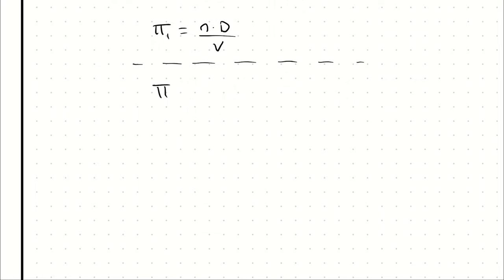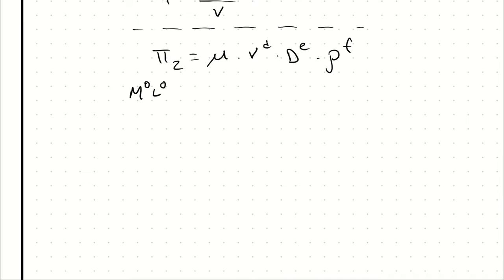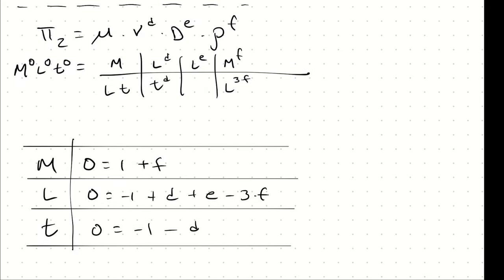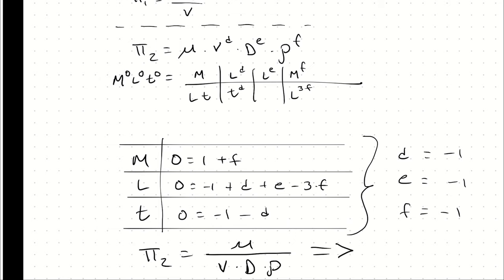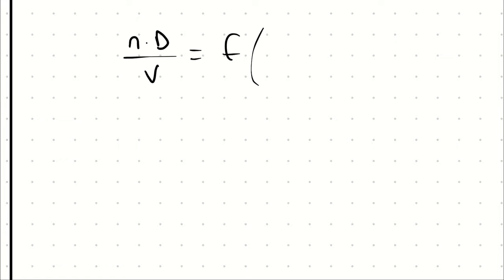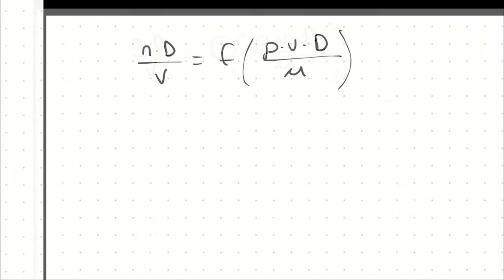For the second pie group, I have essentially the same setup as the previous problem. I have viscosity as a non-repeating parameter, then velocity to the d power, diameter to the e power, and density to the f power. So for my second pie group, I get viscosity / (velocity × density × diameter), which out of convention of the Reynolds number, we typically write as ρvD/μ. That will produce positive numbers that have a positive correlation more often than not.